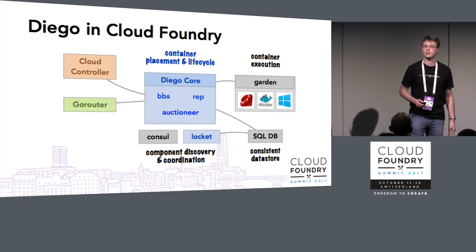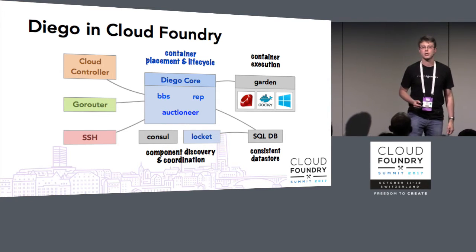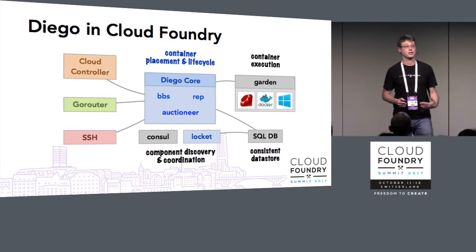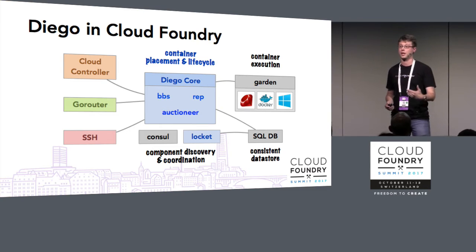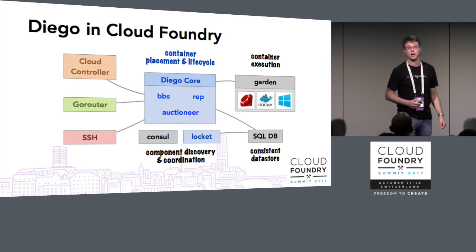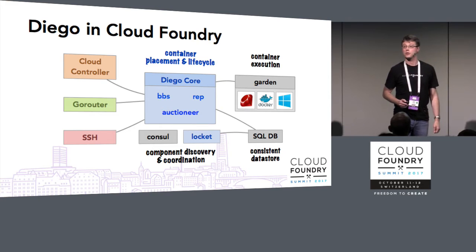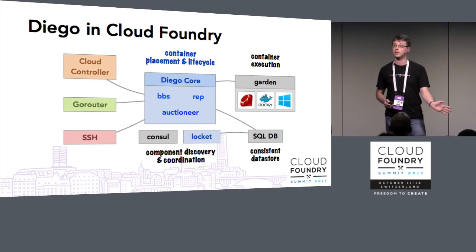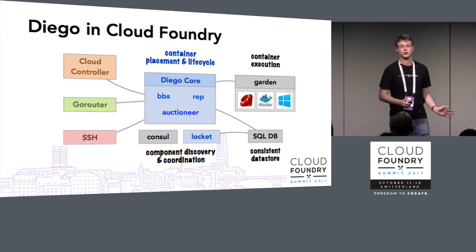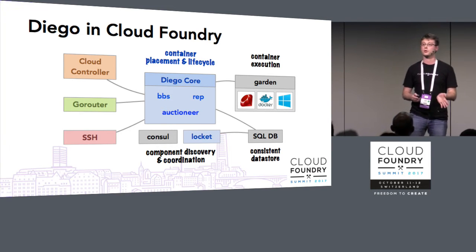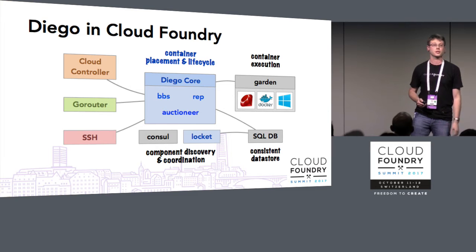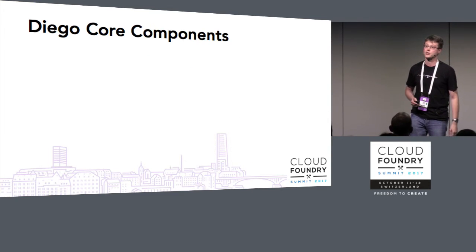Diego also brings in some additional systems, most notably the SSH access system that you can use to get interactive access to your application containers. With that overview in mind, I'd like to give you a picture of what a typical Diego deployment inside of Cloud Foundry looks like — something you might see deployed with a CF deployment using Bosh.